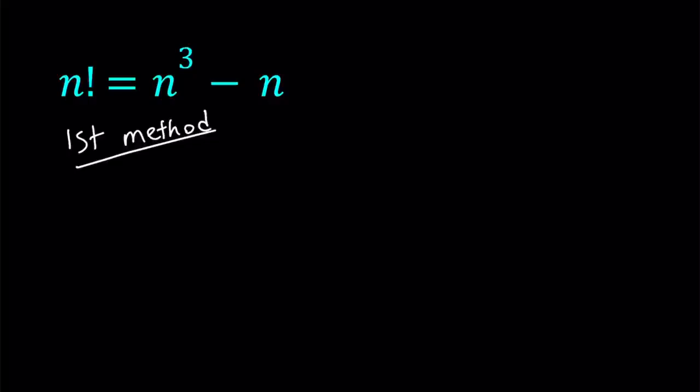So my first method basically involves, and it's going to be the same thing for the second method, we're going to turn this into a nicer equation. Let's go ahead and expand n factorial and write it as n times n minus 1 times n minus 2 factorial. And on the right hand side we have n times the quantity n squared minus 1.